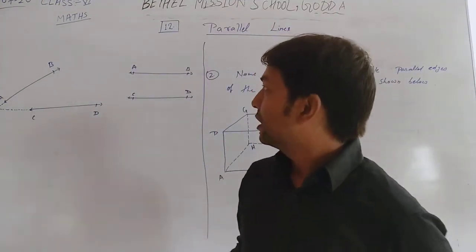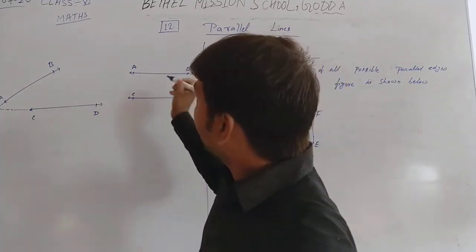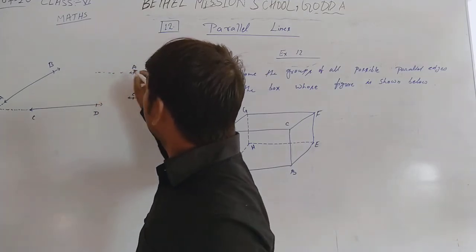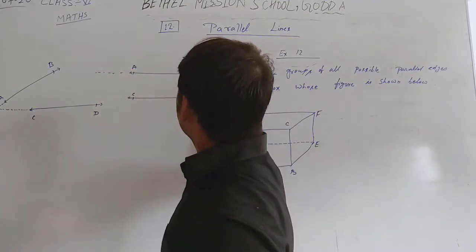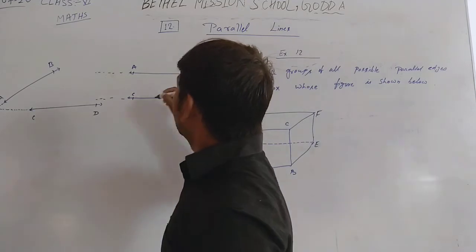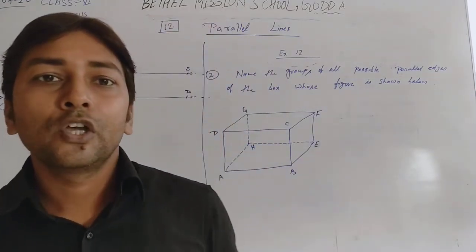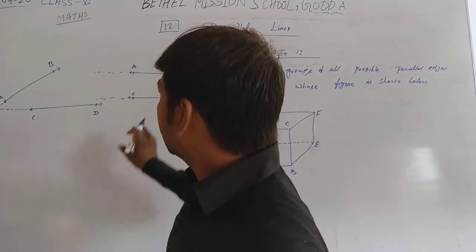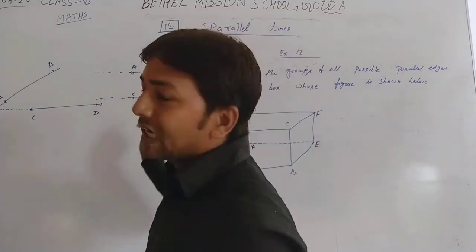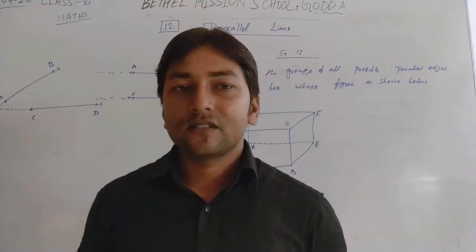But when you produce AB either side — left or right — and CD also left or right, and they cannot meet each other, then these two lines are called parallel lines.